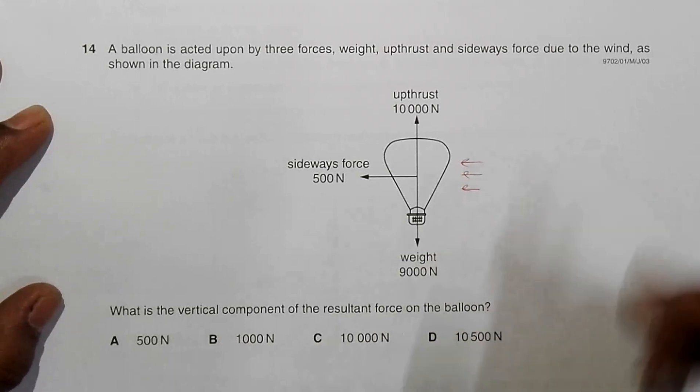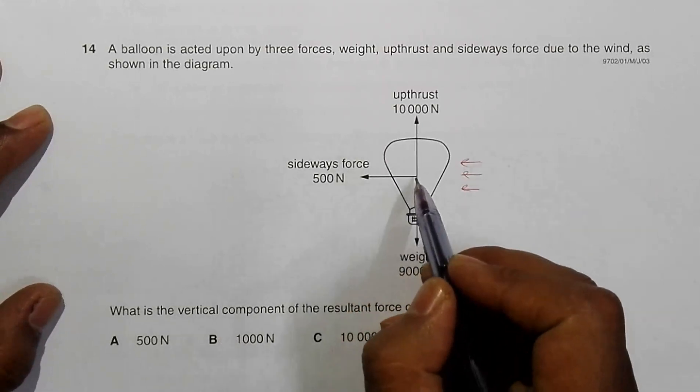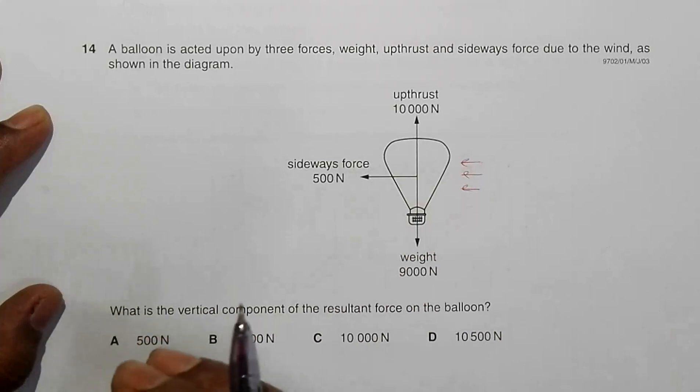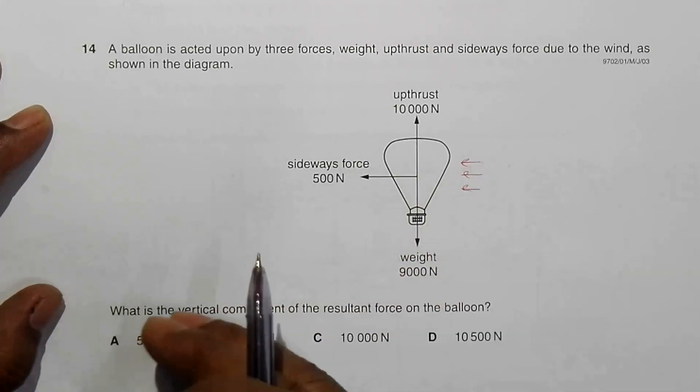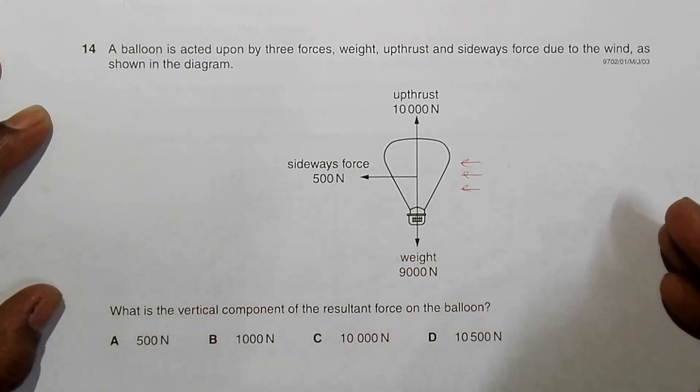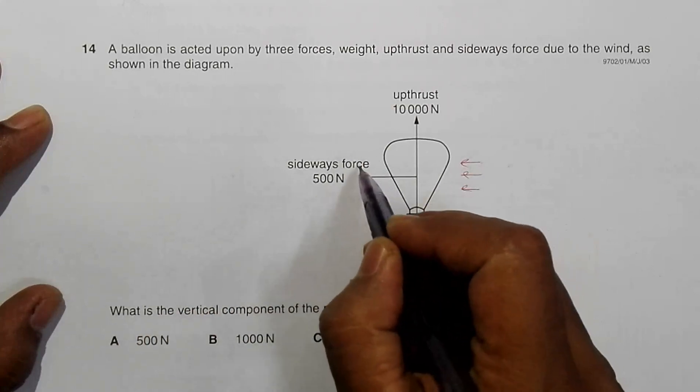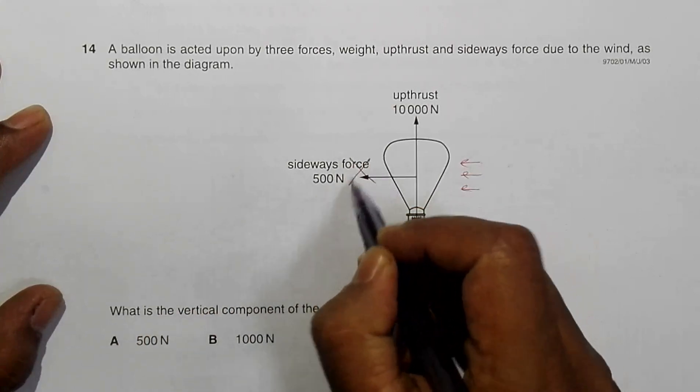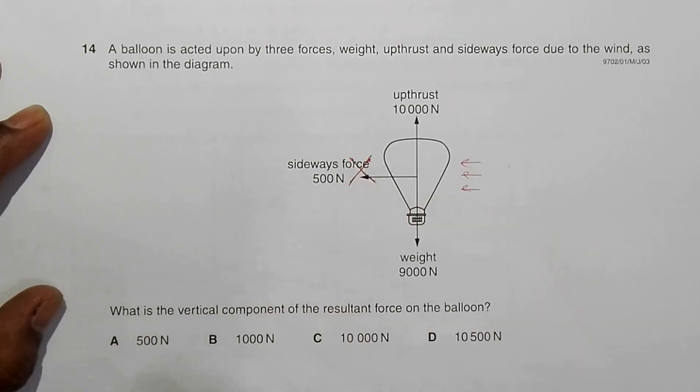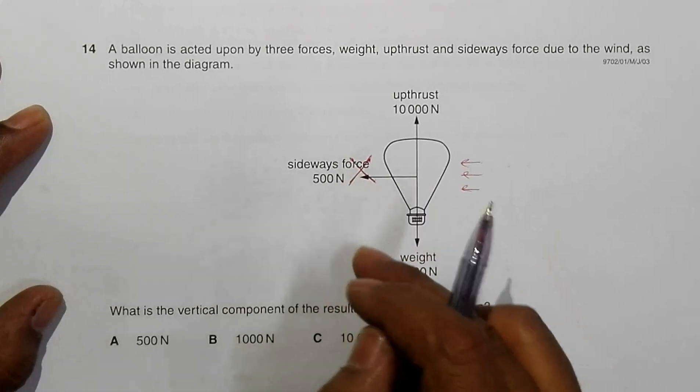Let us remember that any force in the horizontal direction will not have anything in the vertical direction, will not have any component in the vertical direction. That's why this thing does not contribute anything to the vertical component. We can simply avoid this thing.